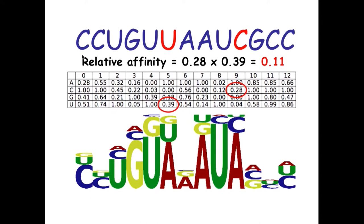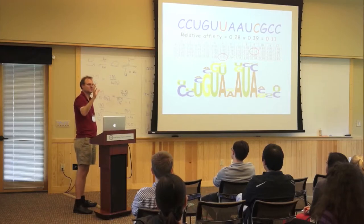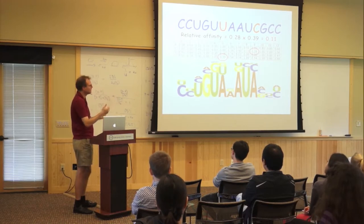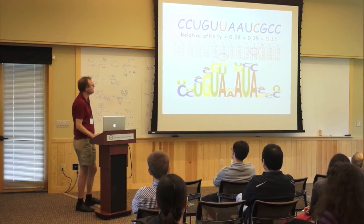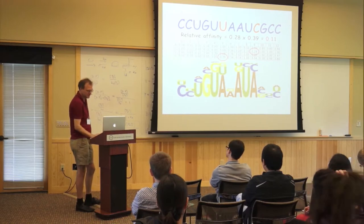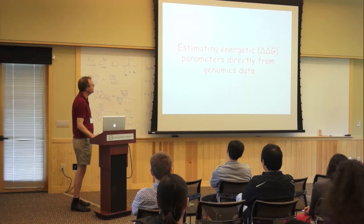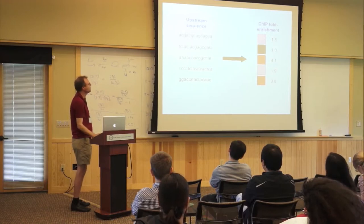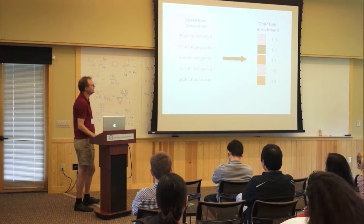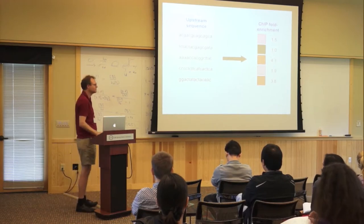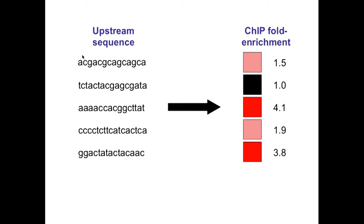This is about the representation of binding specificity when you assume independence between base pair positions — you can add up the energy changes or multiply the fold changes in affinity. But I haven't told you how you would get the numbers in that matrix. The algorithm we developed is called Matrix REDUCE. We came up with a way of estimating these relative affinities from empirical data like expression data or ChIP data. This was developed around 2005, before all the in vitro high-throughput data like protein-binding microarrays was available.